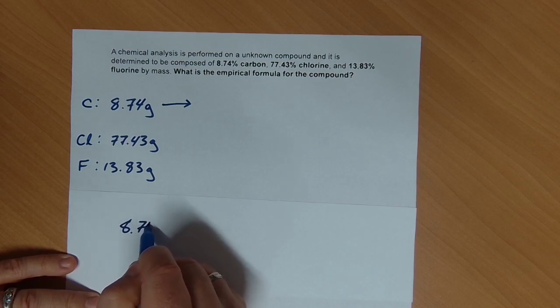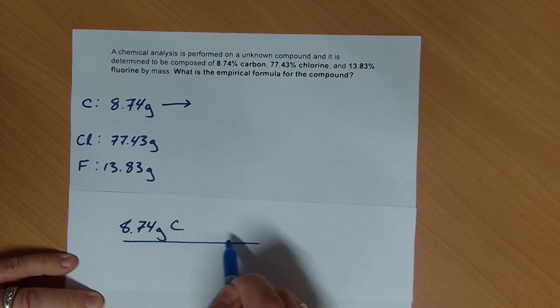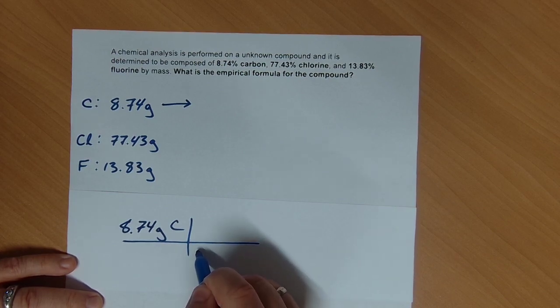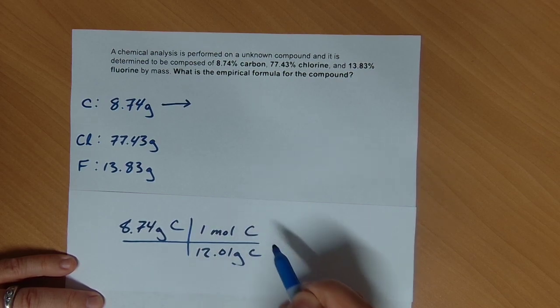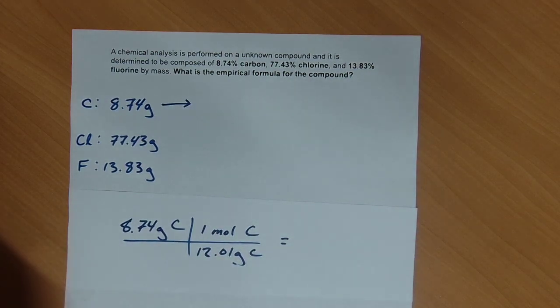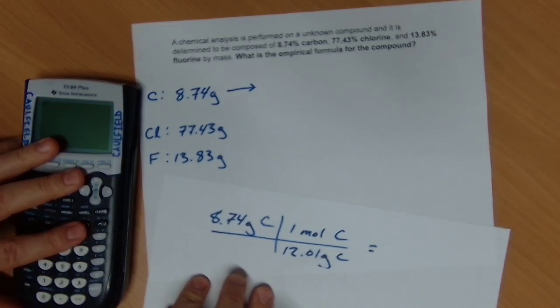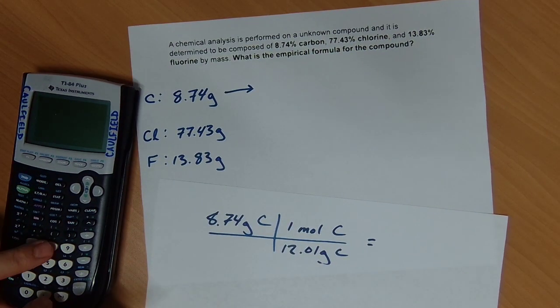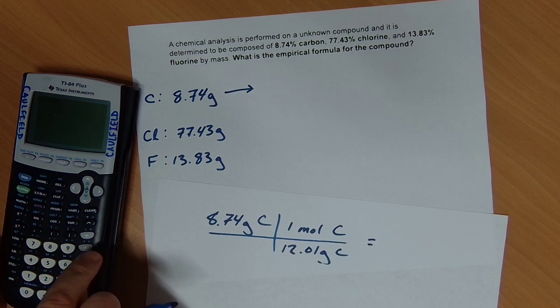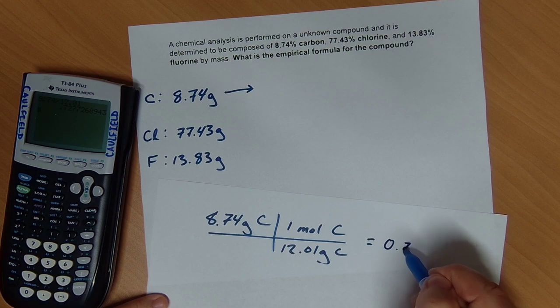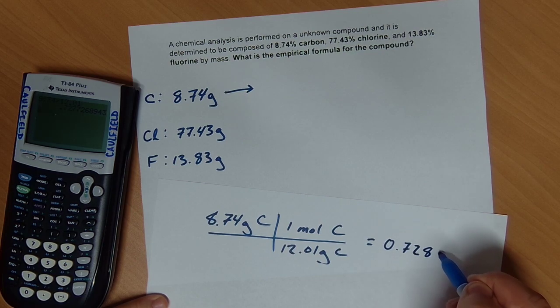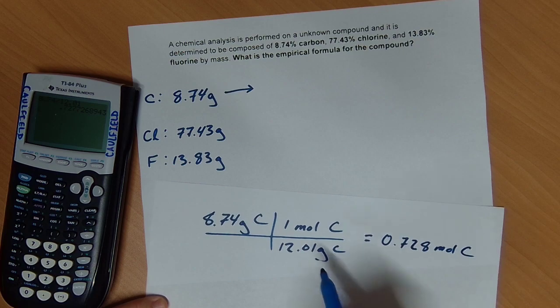So 8.74 grams of carbon. I'm going to divide by molar mass. And so that's going to be 12.01 grams of carbon for every one mole of carbon. And when I do that, I'm going to come over here. I also have my little handy dandy calculator. 8.74 divided by 12.01. That's going to be 0.72. I'm going to round that to 0.728 moles of carbon from grams canceling there.